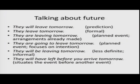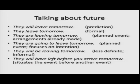In English, verbs do not have a distinct future tense form, but there are various options to talk about future. Look at these examples: 'They will leave tomorrow' — here 'will' is used. 'They leave tomorrow' — simple present. 'They are leaving tomorrow' — present continuous. 'They are going to leave tomorrow' — going to construction. 'They will be leaving tomorrow' — will with continuous form. 'They will have left before you arrive tomorrow' — will with a perfect form.